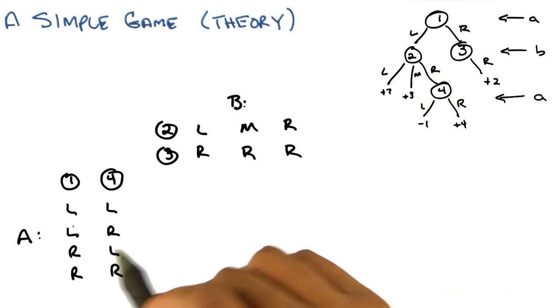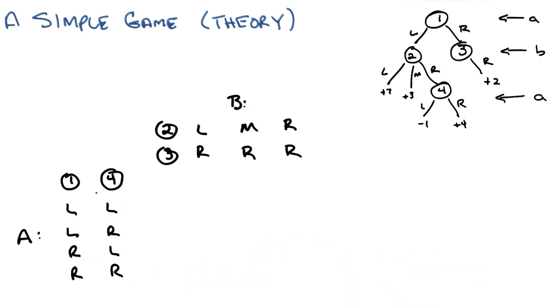A can go left, left, left, right, right, left, right, right, for states one and four respectively.